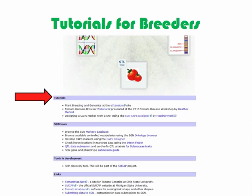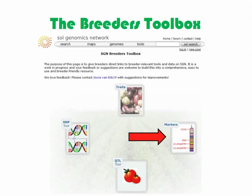When this tutorial was developed, a webinar tutorial for the Tomato Genome Browser was available, as was a slideshare tutorial for the CAPS Designer Tool. Additional tutorials are being developed. This tutorial focuses on the marker search tool, called Markers, in the Breeders Toolbox. Using the Markers Tool, you can search for more information about a specific marker, or search for markers based on a number of selection criteria. This tutorial provides examples of both cases.